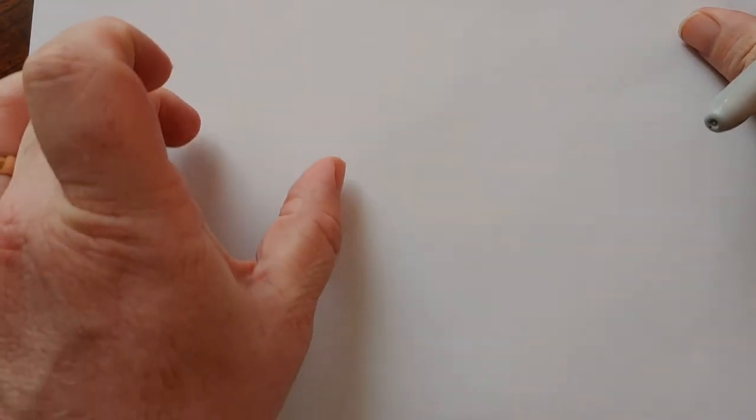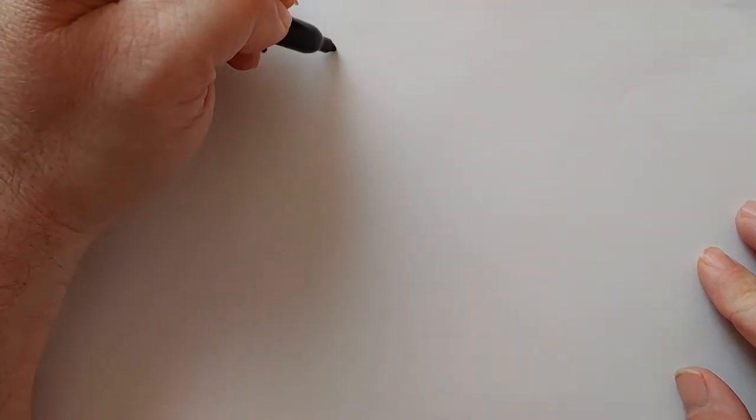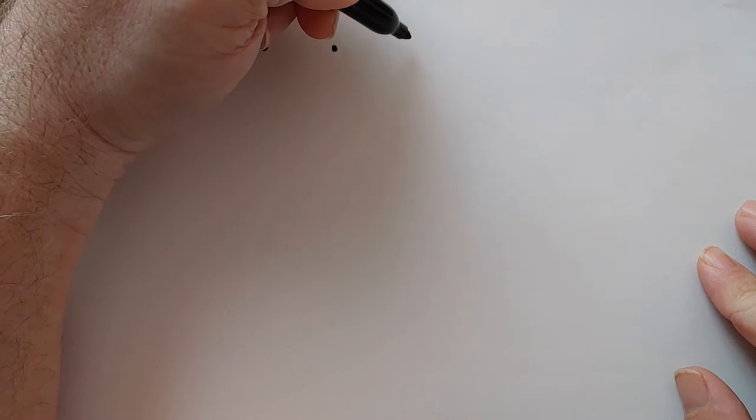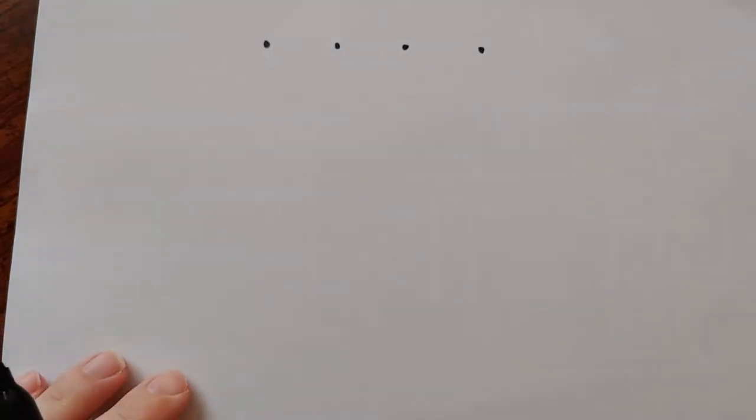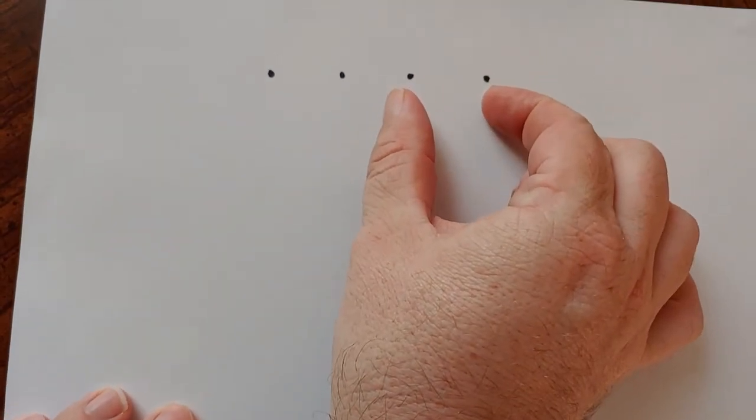You can use a ruler, and what we're going to do is start by making some dots. I'm going to use my finger and my thumb to kind of measure out. So you want to be able to have four dots across. I'm going to start with one, two, three, four. They're equally spaced.